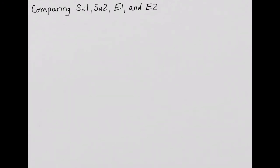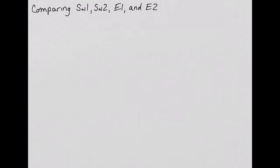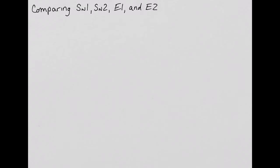In this lecture, we will discuss the differences between the different substitution and elimination mechanisms. We will talk about how to predict the relative rates of these different mechanisms, as well as the differences in product that can result. We will start by learning how to predict which mechanisms will predominate. Remember that whichever mechanisms happen fastest will predominate and will lead to the major products.